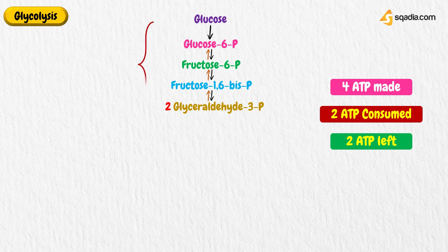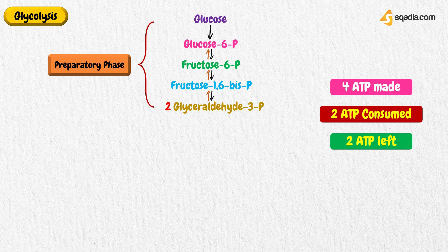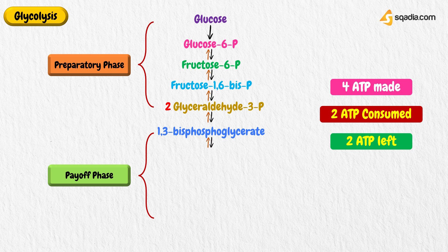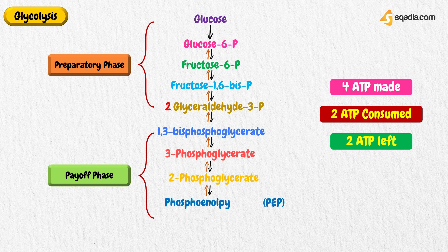Fructose 1,6-bisphosphate is then cleaved into two phosphorylated 3-carbon compounds: glyceraldehyde-3-phosphate and dihydroxyacetone phosphate. Finally, the isomerization of DHAP to a second molecule of glyceraldehyde-3-phosphate occurs. In the preparatory phase, therefore, glucose is split into two molecules of glyceraldehyde-3-phosphate and two ATP are consumed. In the payoff phase — the remaining five steps — the two molecules of glyceraldehyde-3-phosphate are converted into two molecules of pyruvate, with the concomitant production of 4 ATP. Reducing equivalents are also extracted and conserved in the form of the reduced coenzyme NADH. The metabolic fate of NADH depends on the cell type and aerobic or anaerobic conditions.